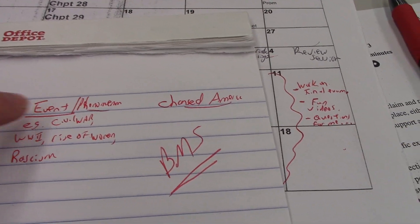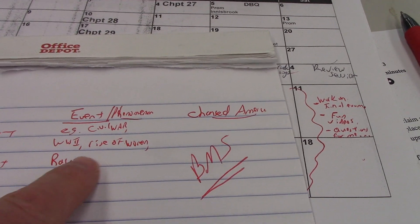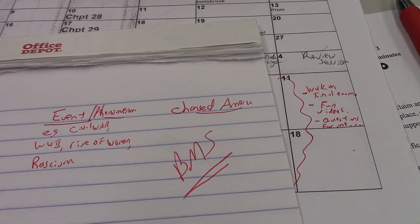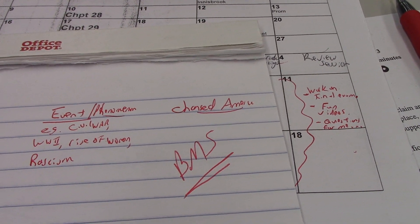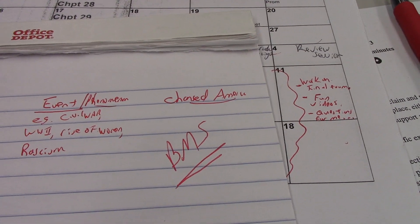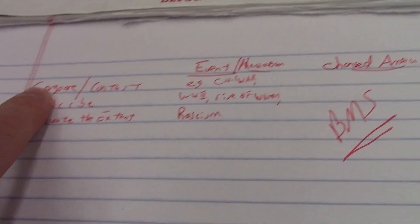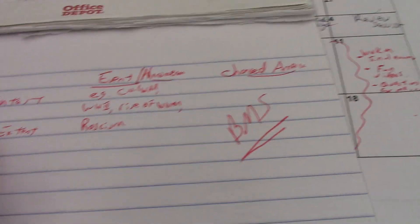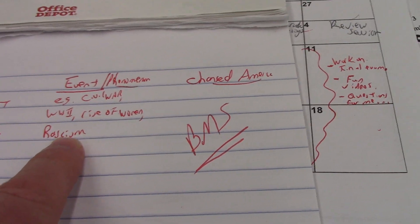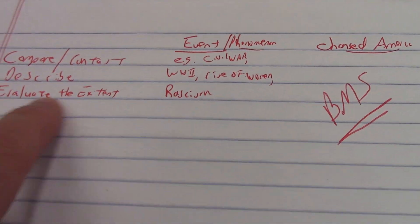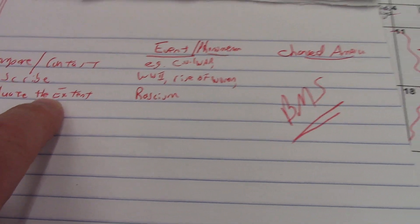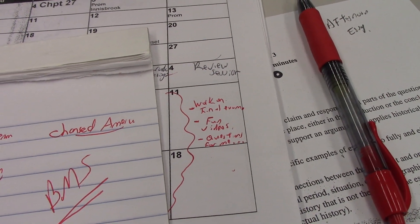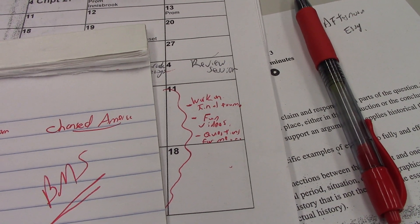Then pick all the major phenomena and major events you can think of in American history — like the Civil War, World War II, the rise of women, the role of racism, industrialization in America, religion in America, the American Revolution. Then combine them: compare and contrast how World War I and World War II affected America; describe the role of racism in the North and South; evaluate the extent of the Civil War in changing America.